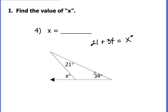In this example, I take 21 and 34, and that equals the exterior angle x degrees. 20 and 30 make 50, plus 4 and 1 give me 55. So that exterior angle is equal to 55 degrees. That's all we're doing on this particular problem.